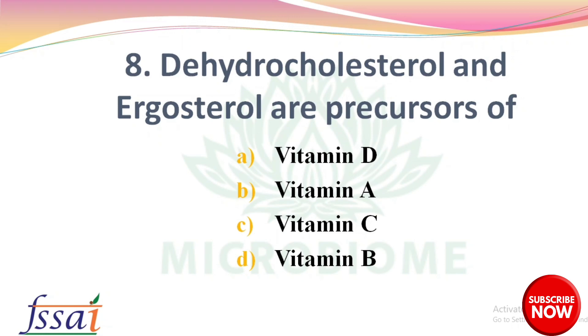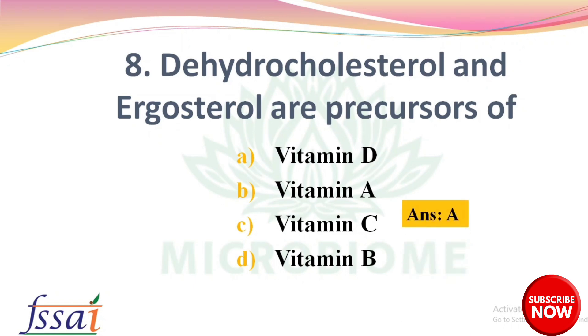Next question: 7-dehydrocholesterol and ergosterol are precursors of — options: vitamin D, vitamin A, vitamin C, vitamin B. The right answer is option A, vitamin D.